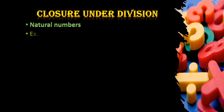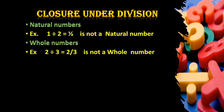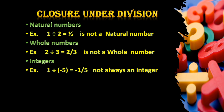Closure under division. For natural numbers, when one natural number is divided by another natural number, we do not always get a natural number as the quotient. For whole numbers also, when a whole number is divided by another whole number — for example, 2 divided by 3 gives 2/3, which is not a whole number. For integers, when an integer is divided by another integer, we do not always get an integer as the quotient.